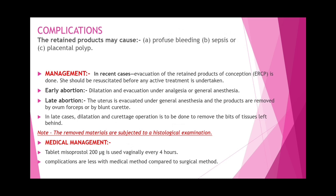Medical treatment for incomplete miscarriage: progesterone 200 mg is used. Missed miscarriage is when the fetus is dead and retained inside the uterus for a variable period — called missed miscarriage or early fetal demise. The cause of prolonged retention of the dead fetus is not clear.